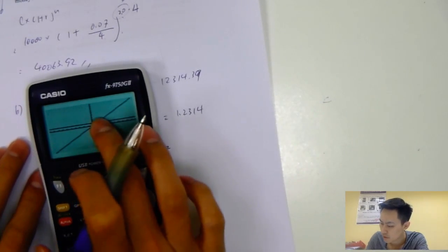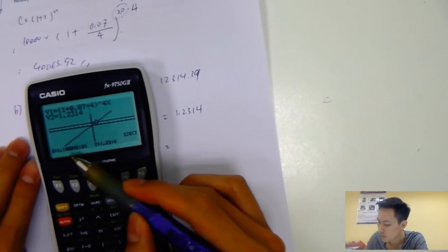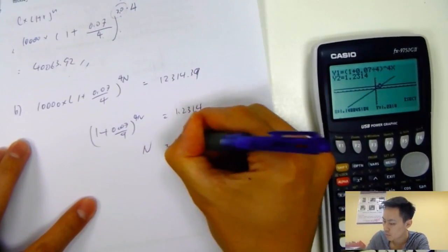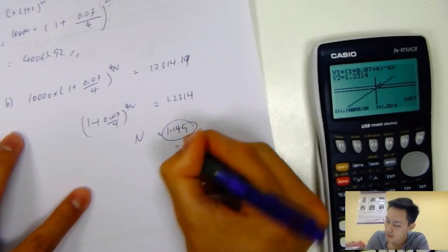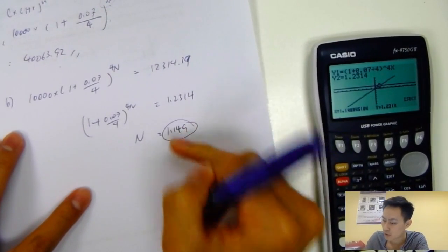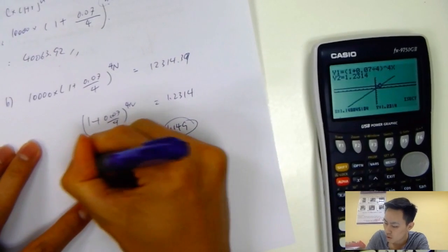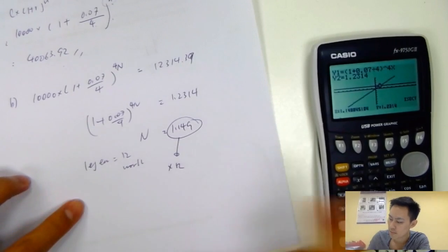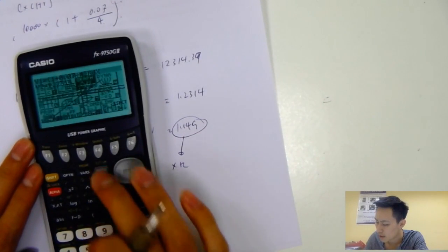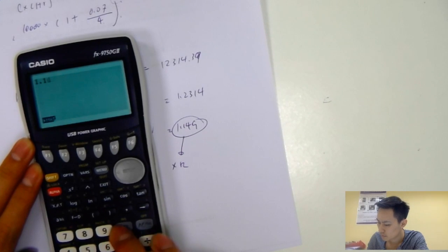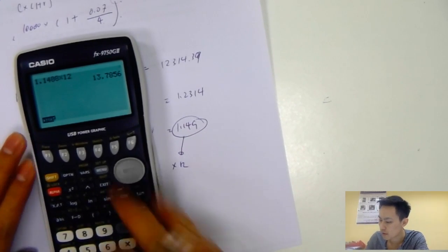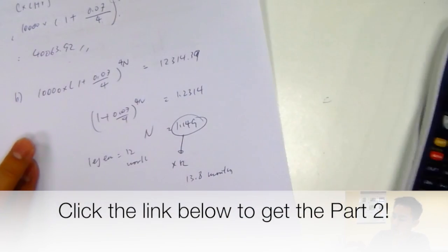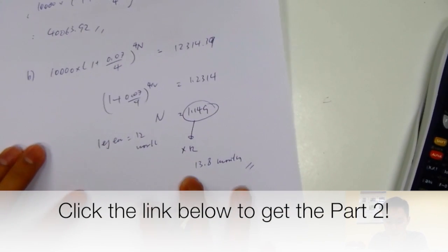Trace the intersection point. The n would be 1.149. That's the number of years. But this is not the number of months. You have to multiply this, because 1 year equals 12 months. Multiply by 12. 1.1488 times 12 equals 13.8 months. That is the answer. Next page.